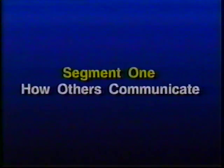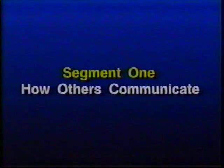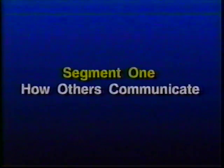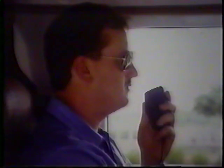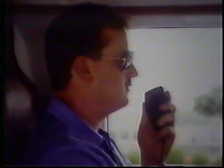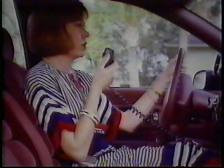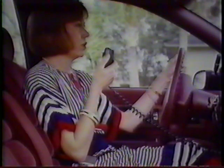Segment one: How others communicate. Segment one presents information on how others communicate their intended actions through the use of horn, lights, vehicle position and movement, and personal behavior. A driver on the road asks for directions to a trailer court near the John Deere plant on Second Avenue.